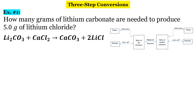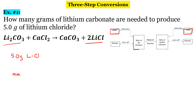The first problem asks: how many grams of lithium carbonate are needed to produce five grams of lithium chloride? This one is just like the ones in the previous video — we're going from grams to grams. So step number one, let's write out what we're given: 5.0 grams of lithium chloride. We need the molar mass of lithium chloride to convert that, so our first step is to go from grams to moles.